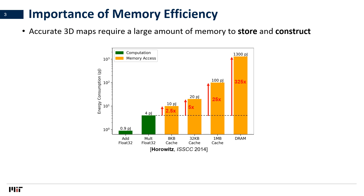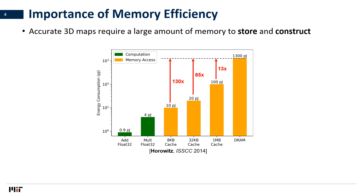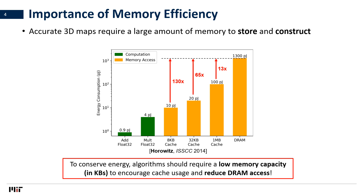Unfortunately, accurate 3D maps require a large amount of memory to both store and construct, which leads to significant energy consumption on energy-constrained devices. In this figure, we plotted energy consumption on the y-axis, with different types of arithmetic and memory operations on the x-axis. Energy consumption associated with different types of memory accesses, shown in orange, are orders of magnitude higher than different types of floating-point computation, shown in green. In addition, accessing data stored in a larger off-chip memory such as DRAM requires more than an order of magnitude higher energy than on-chip cache with only kilobytes to megabytes of storage. To conserve energy, algorithms should require a low memory capacity on the order of kilobytes to encourage cache usage and reduce DRAM access.